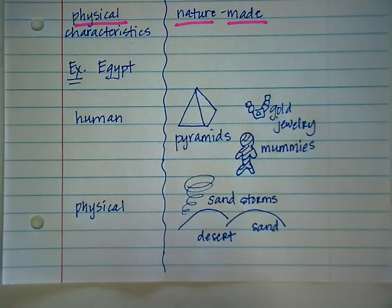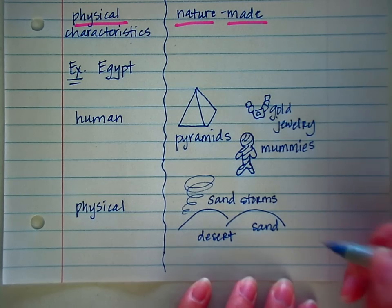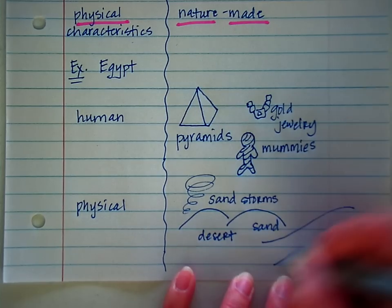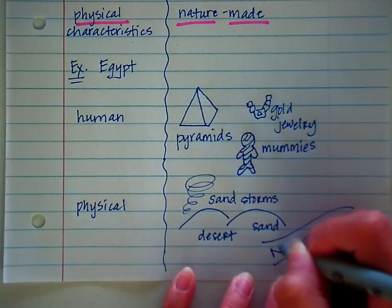Another really important physical characteristic for Egypt, because this is what allowed them to be able to live in that desert region, the Nile River.